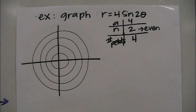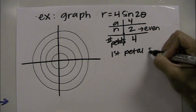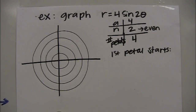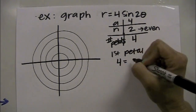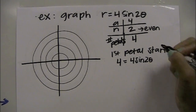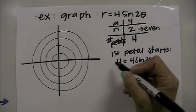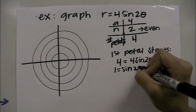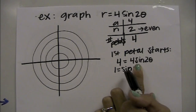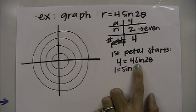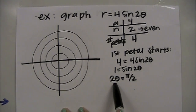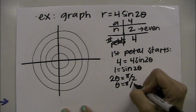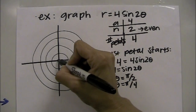Next, find where the first petal begins. We take a, which is 4, and plug it in for r, giving us 4 equals 4 sine of 2θ. Dividing by 4 gives 1 equals sine of 2θ. Sine of what angle equals 1? The answer is π/2. So we set 2θ equal to π/2 and solve to get θ equals π/4. The first petal starts at the angle π/4.